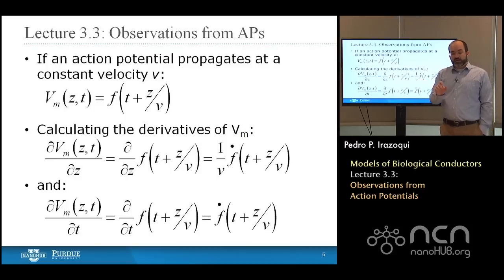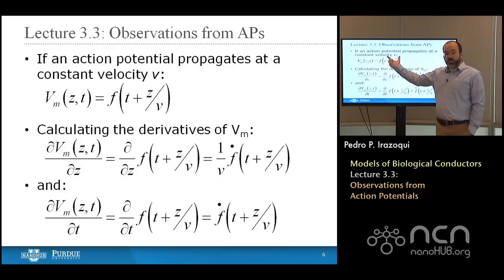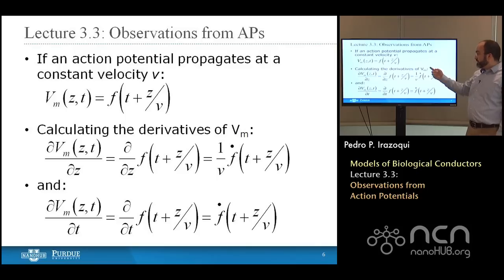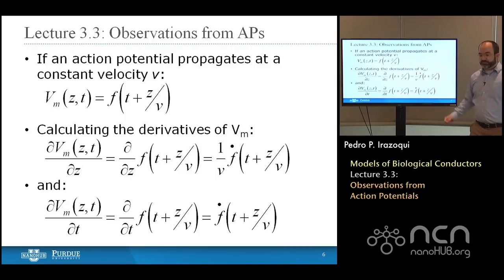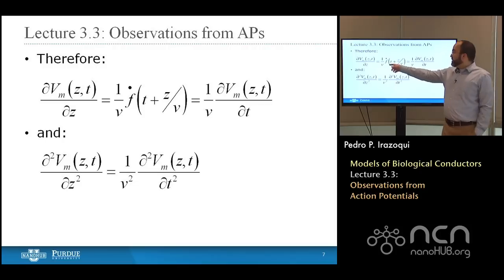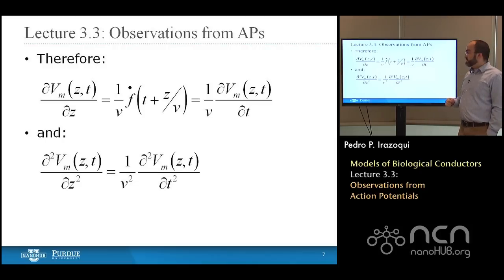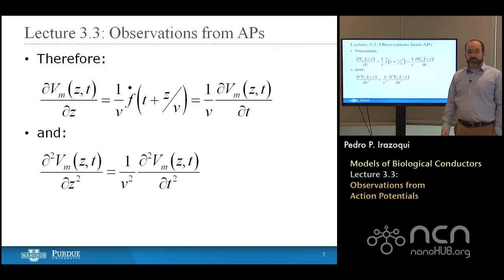With this constant-velocity approximation, which is fairly accurate in a neuron, the membrane voltage as a function of two variables can be described as a function of a single variable. This allows us to calculate the derivatives: the first derivative with respect to Z equals one over V times the partial derivative of the membrane voltage with respect to time. The second derivative of the membrane voltage with respect to distance equals one over V squared times the second derivative of the membrane voltage with respect to time.